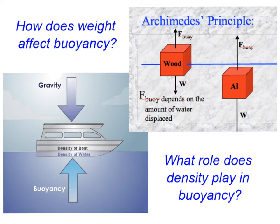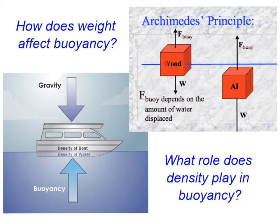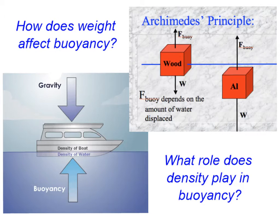Obviously weight affects buoyancy. If we replace our circular objects with two blocks — one made of wood and one of aluminum — and think of the line as the surface of the water, both blocks displace the same amount of water. But the gravitational force on the wood block is not enough to make it sink, because the wood block's weight is much less than the aluminum's. This has a lot to do with density. Density is the amount of mass per volume, and wood is much less dense than aluminum.